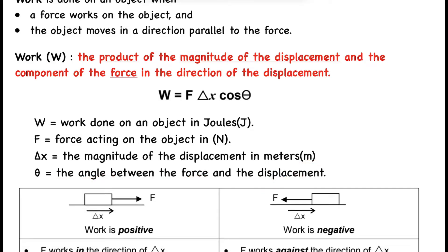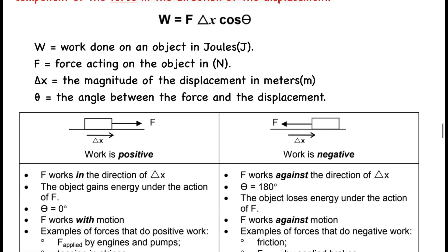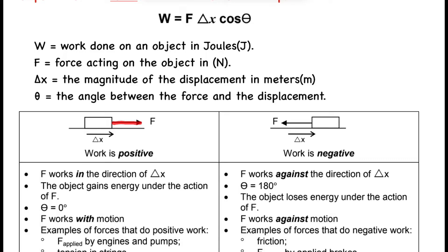The angle is between the force and the displacement — that's theta. Now, let's say we have an object with a force applied in a certain direction, and the object moves from here to here — a displacement of, say, two meters. If the displacement and the force are in the same direction, they are parallel and going the same way, so the angle between them is zero degrees.